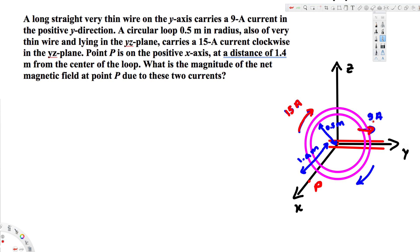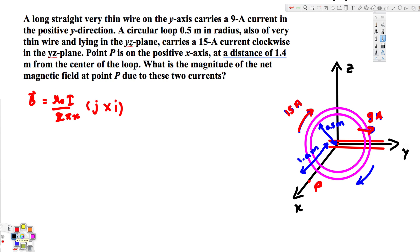Let's start with the long wire. For a long thin wire, to find the magnetic field we use the equation B = μ₀I / 2πx. The direction of this magnetic field depends on the current direction and the point we are looking at. Here the current direction is in the y-axis, so that's ĵ cross î, which gives negative k̂. This equation is for the long thin wire.